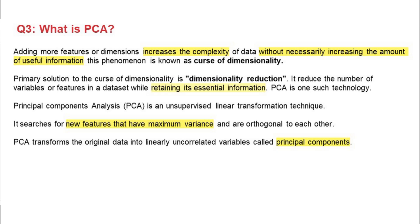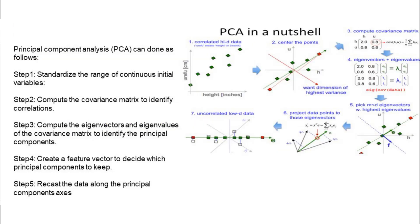So what exactly does PCA do? It searches for new features that have maximum variance and are orthogonal to each other. PCA transforms the original data into linearly uncorrelated variables called principal components. Our original features are transformed into these principal components.